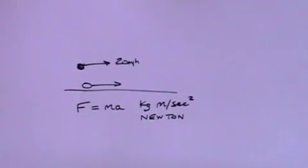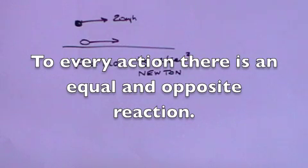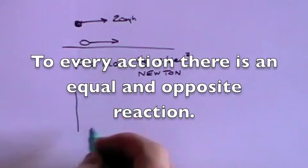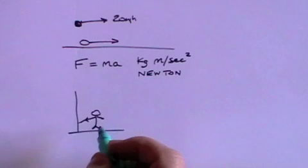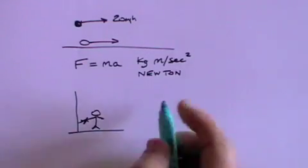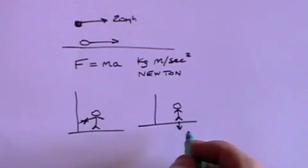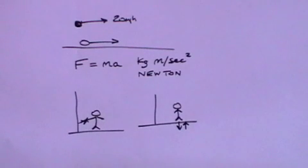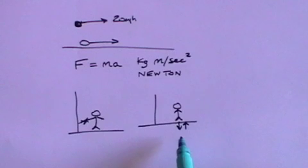Force is expressed in Newtons. Newton's third law is commonly expressed as: to every action there is an equal and opposite reaction. This means that if I lean against a wall and exert a force on that wall, the wall exerts an equal and opposite force on me. When I stand on the ground, I exert a force on the earth, and the earth exerts an equal and opposite force on me. In other words, the force by body one on body two is equal to the force by body two on body one.